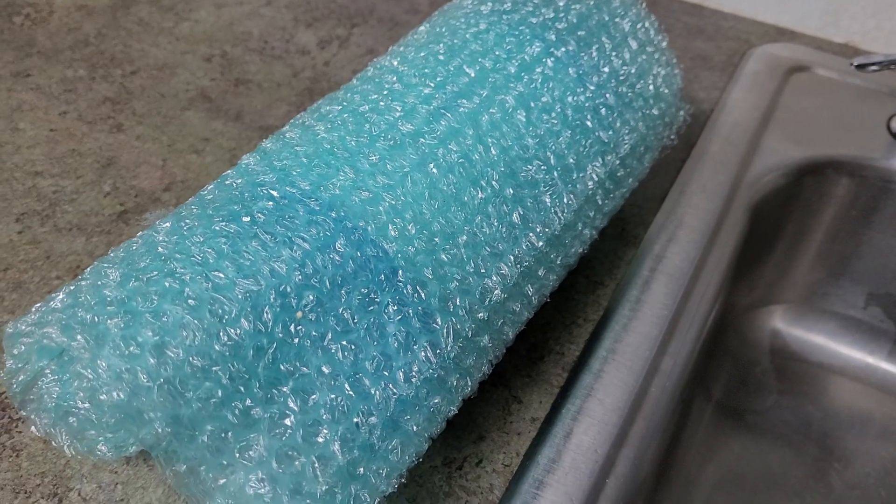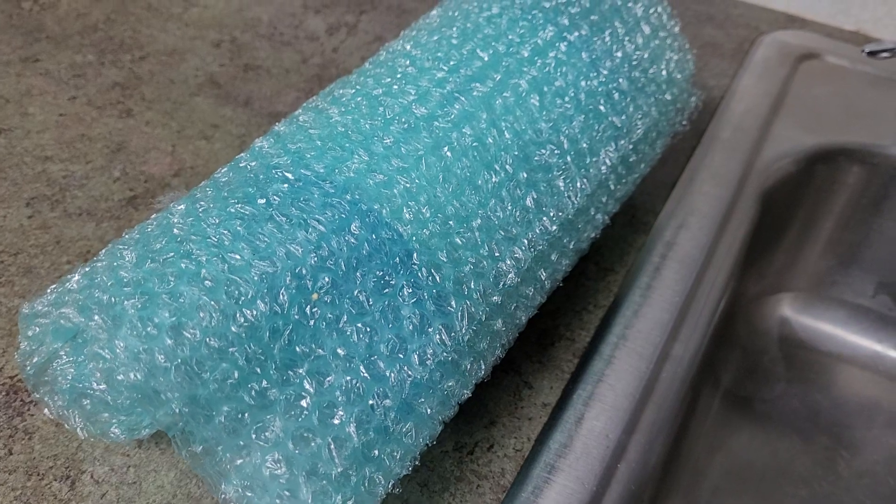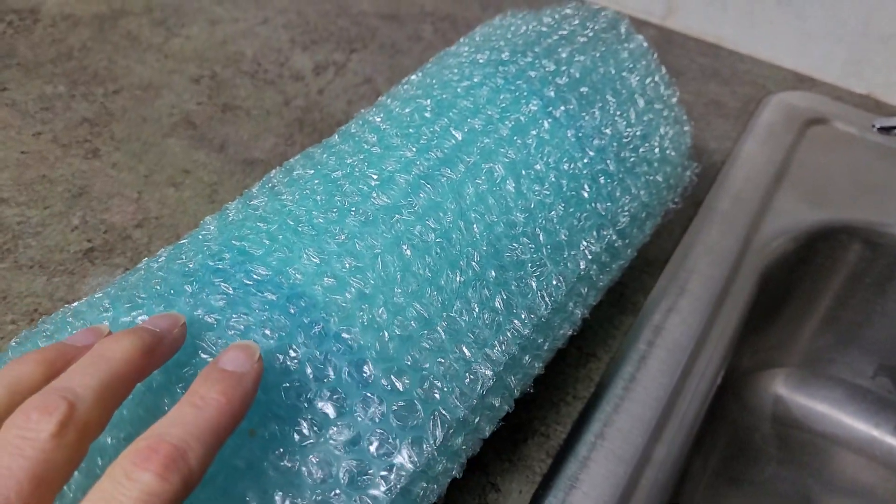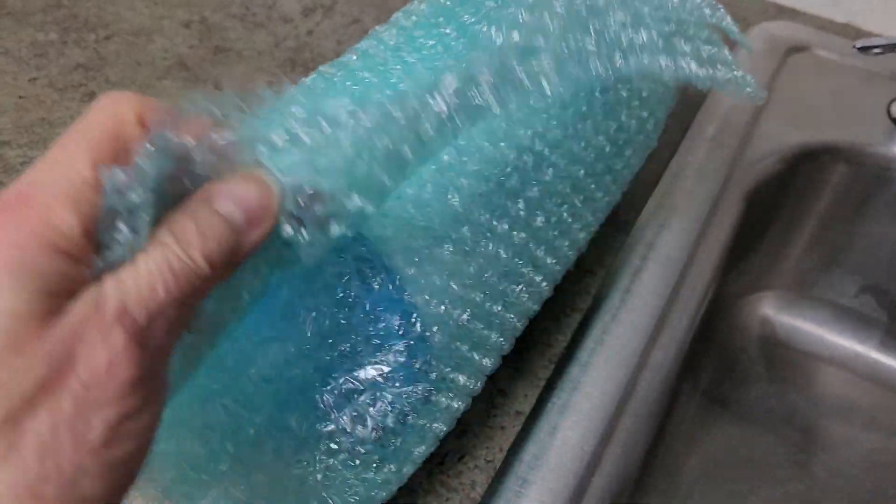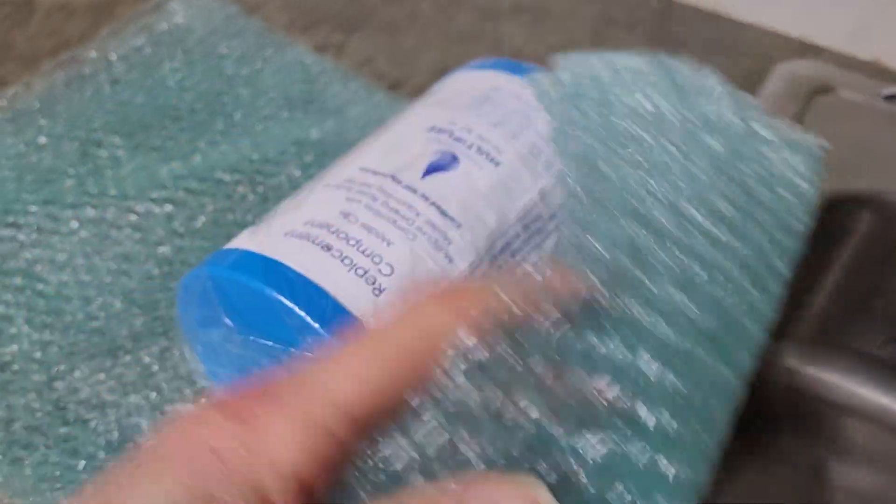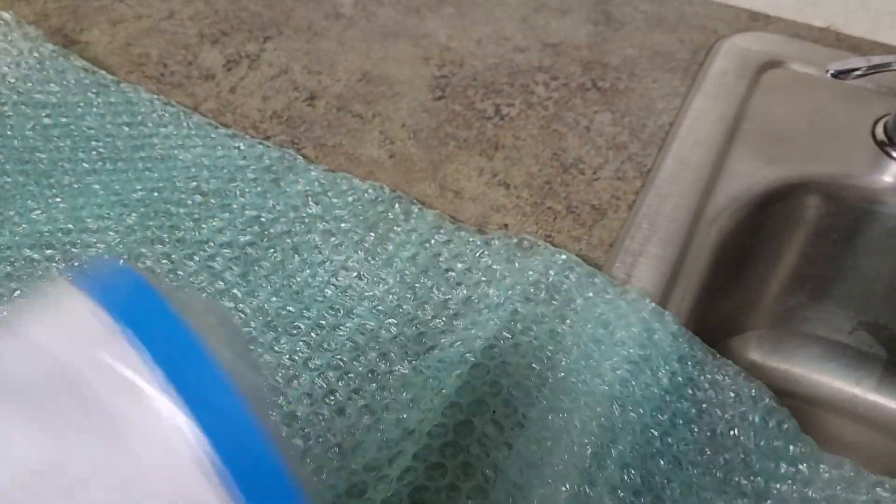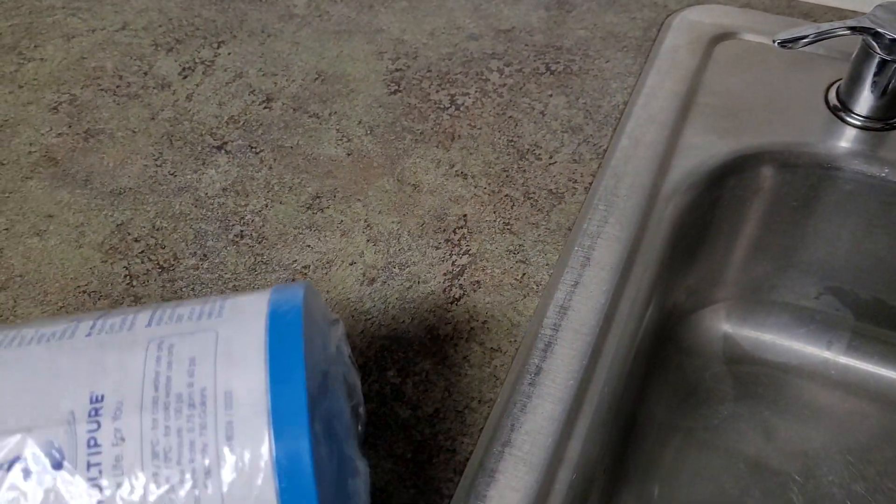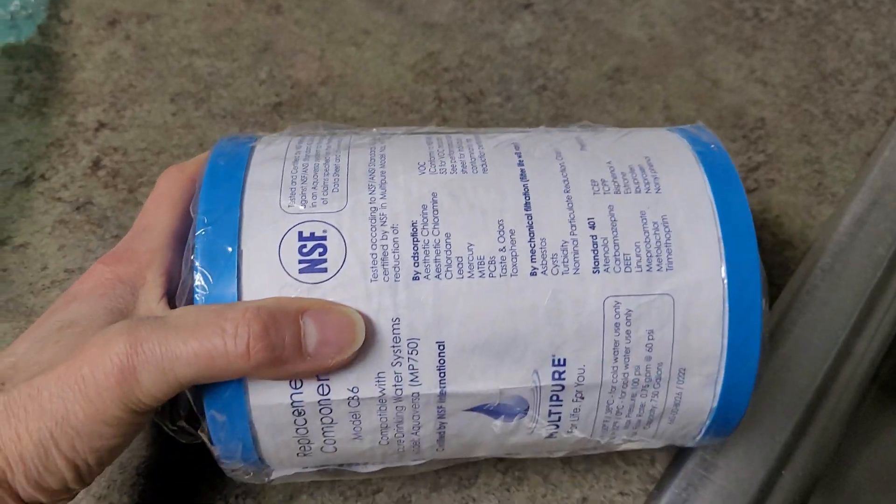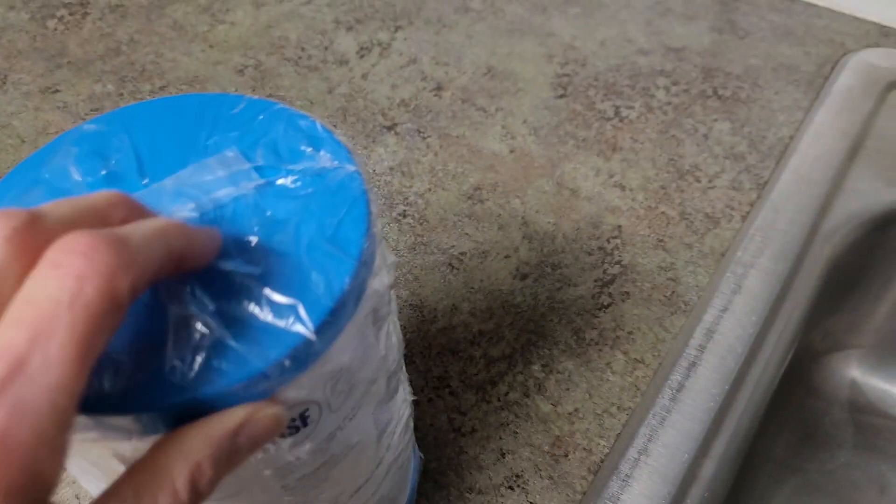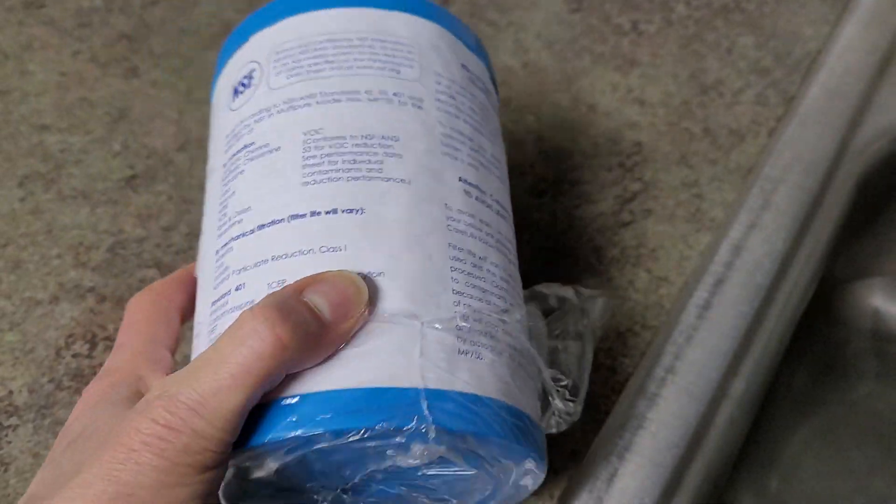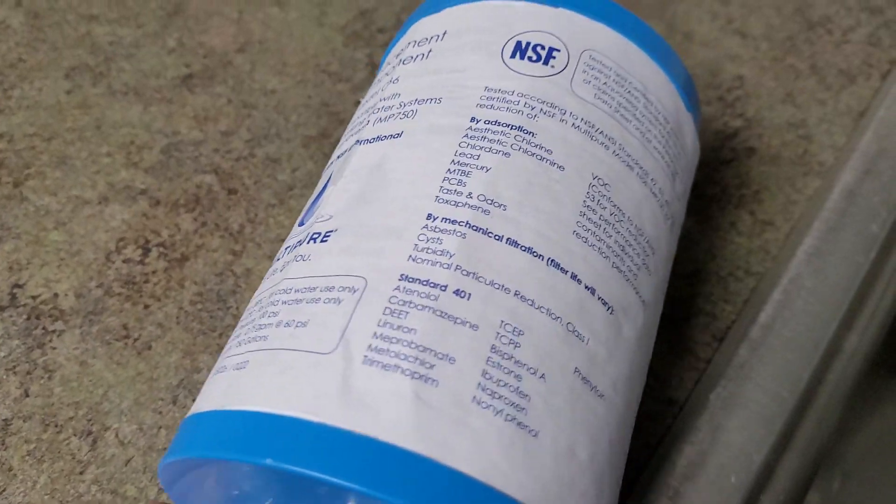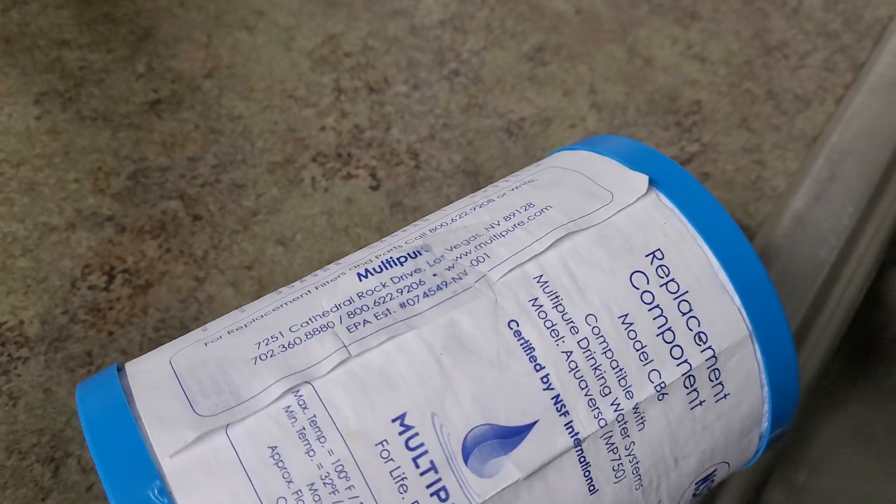So let's get started with what you will see when you get your box that has your filter in it. It's got the protective bubble wrap and has a nice plastic airtight bag around it. Just take that off.